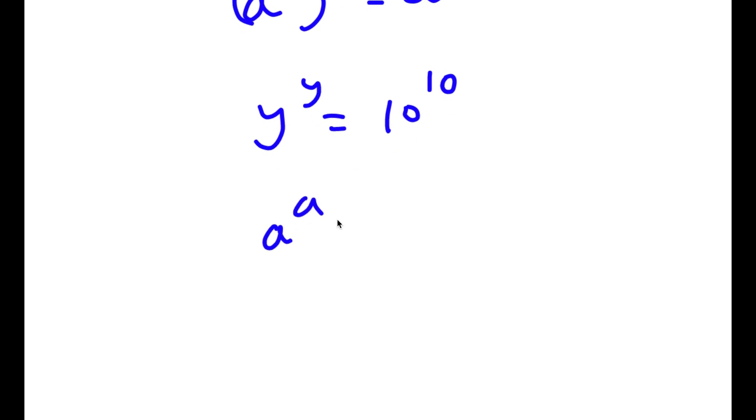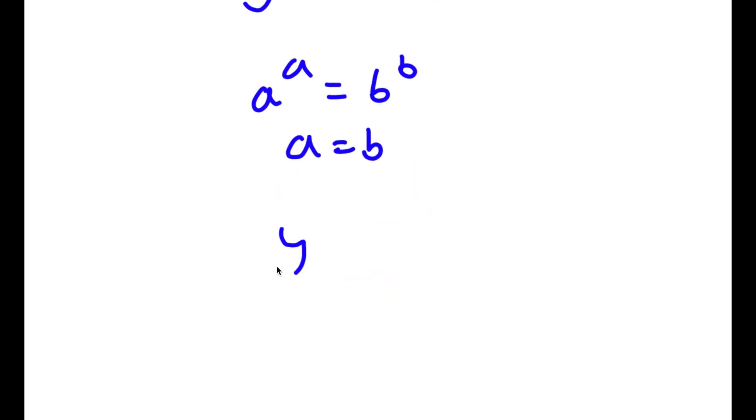Now if I have something in the form a to the power of a is equal to b to the power of b, this means that a is equal to b. So in this case, since y to the power of y equals 10 to the power of 10, y is equal to 10.